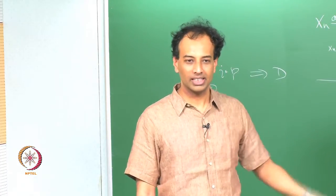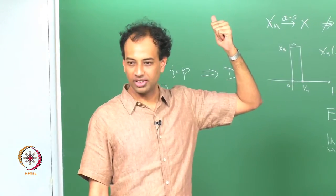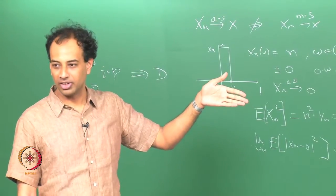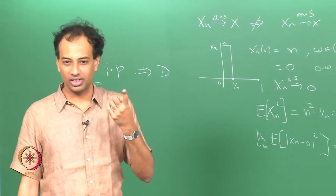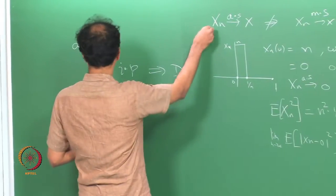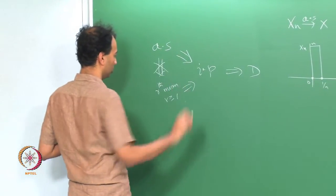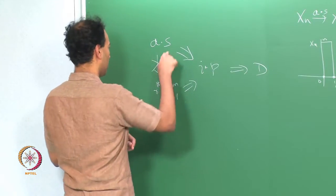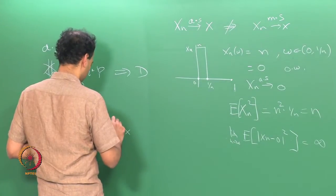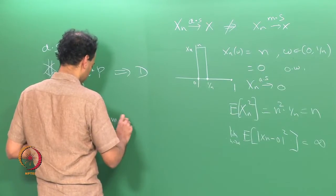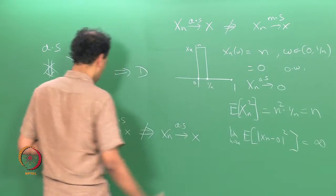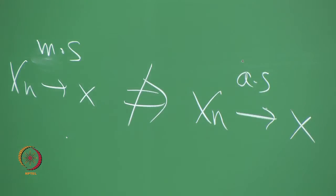So the mean square goes to infinity whereas the random variable goes to 0 almost surely. With very small probability the random variable takes very large values. Although the random variable tends to 0 almost surely, we have a situation where the mean square goes to infinity and the mean goes to 1 — that we have already seen. That is the counter-example showing almost sure does not imply mean square.